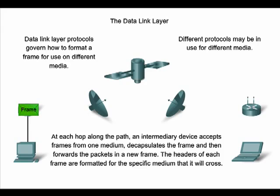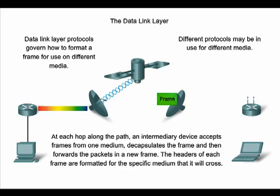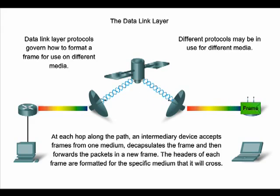These networks can consist of different types of physical media, such as copper wires, microwaves, optical fibers, and satellite links. Network layer packets do not have a way to directly access these different media.